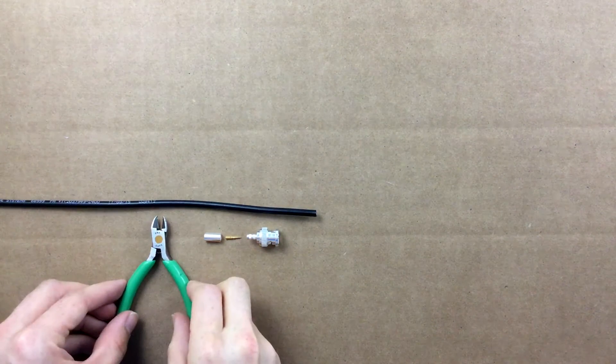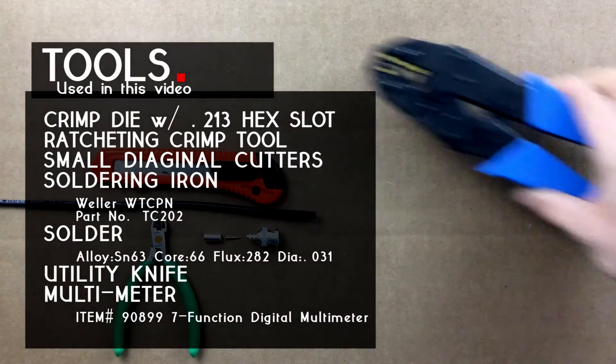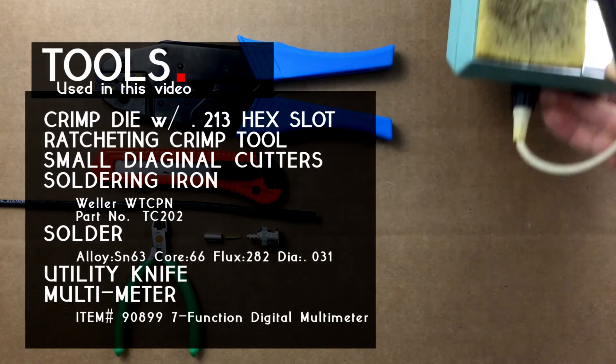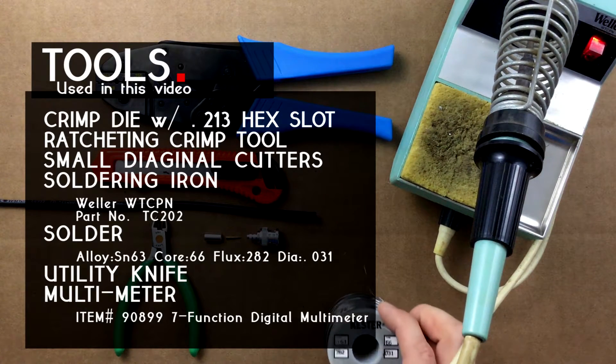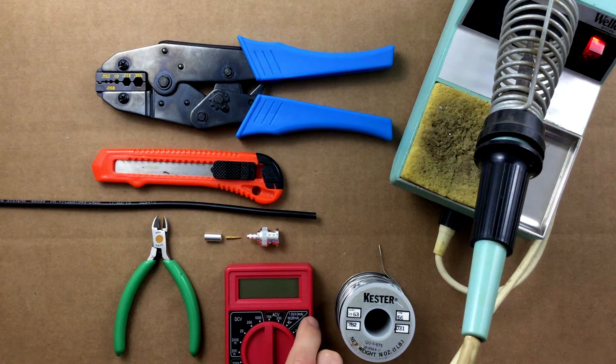Welcome to another Max Gain Systems installation series video. We will be installing a BNC Male crimp-on connector onto LMR195 coax. This coax has a single braided shield and a solid center conductor. The Max Gain Systems BNC Male connector can easily be installed using standard stripping dimensions.